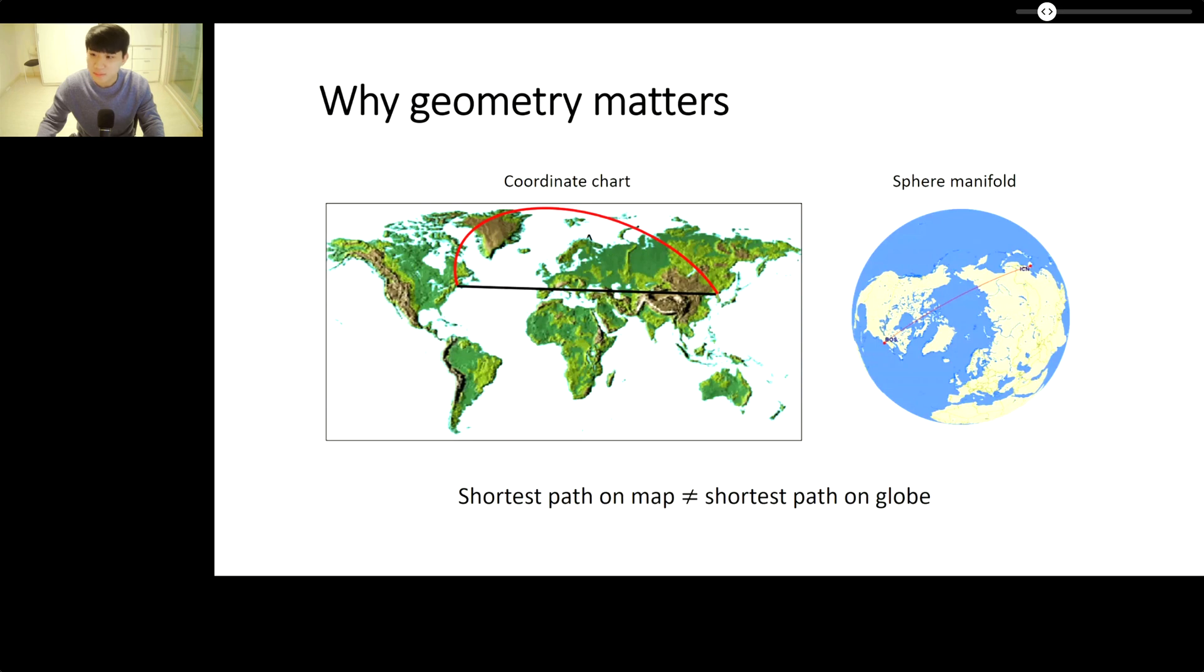Let's consider the globe shown on the right and 2D map shown on the left. Imagine you are a pilot trying to find the shortest route from Boston, USA to Incheon, South Korea. You may find the shortest path on the map, the black straight line shown on the left. However, this is different from the real shortest path, the red curve called the great circle. This is because there is a geometric distortion between map and globe.